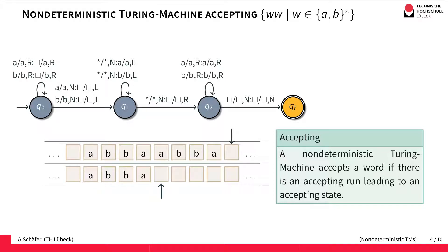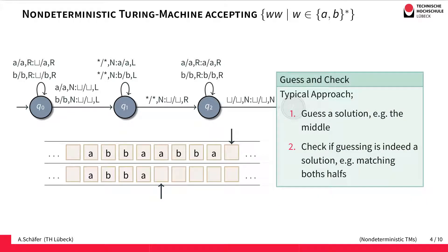Like other non-deterministic automata, a non-deterministic Turing machine accepts if there is an accepting run that leads to an accepting state. This definition leads to the so-called guess-and-check approach: first we guess a solution — in our example, the middle — and then as a second step we check if the guess was correct, i.e., whether the solution satisfies the condition. Here the check was matching both halves.